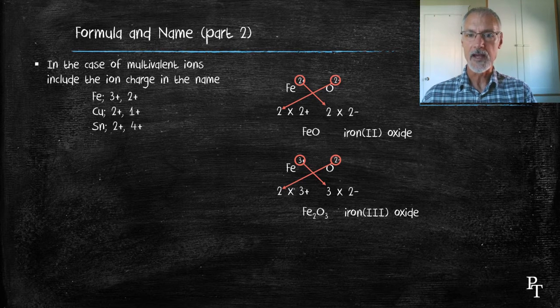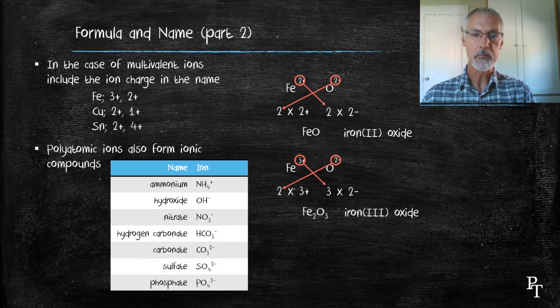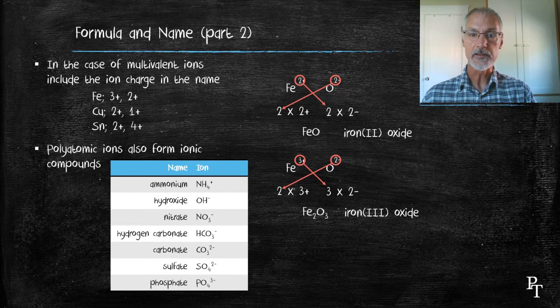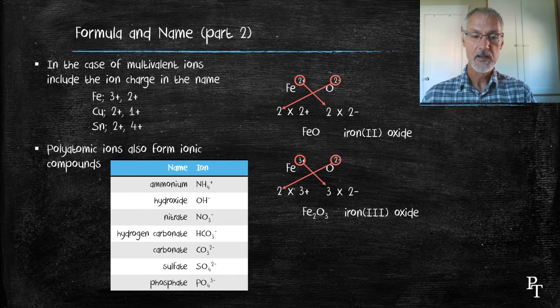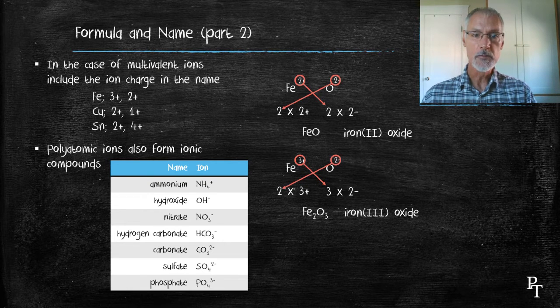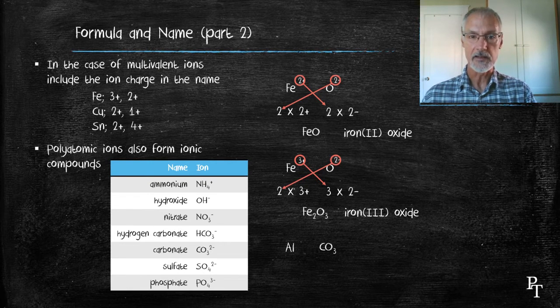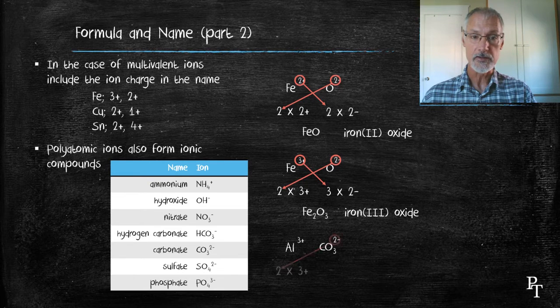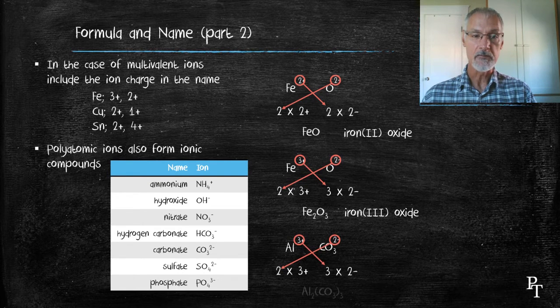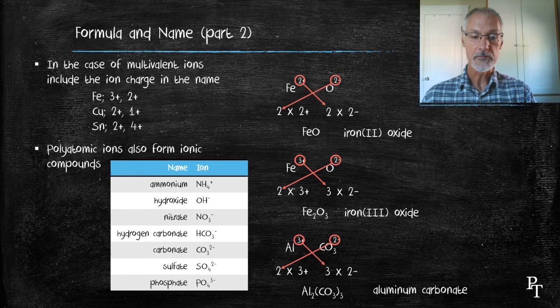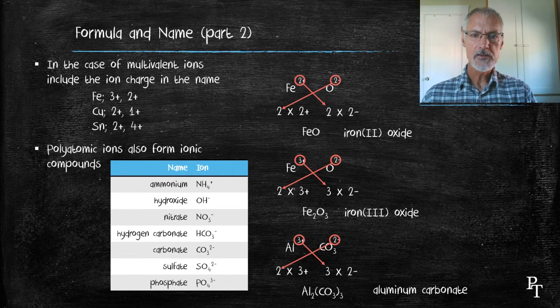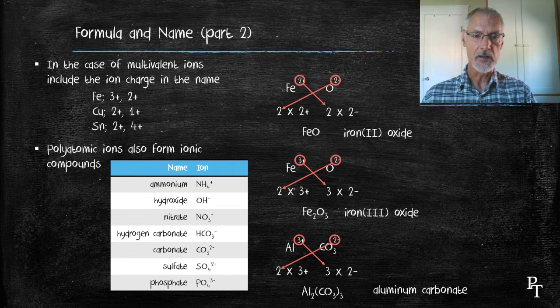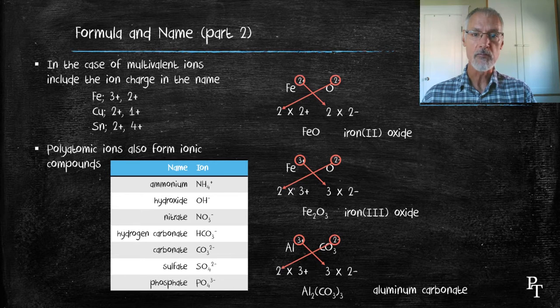We also have groups of atoms which can develop charges. We call these polyatomic ions, and these you need to commit to memory. Let's look at the combination of aluminum with what is called a carbonate ion. Again, I identify their charges, apply the crisscross rule to ensure that the charges balance each other, and that gives me the formula of aluminum with three carbonates. Notice the use of brackets in the use of those compounds. Brackets are important when you have more than one of a polyatomic ion present.